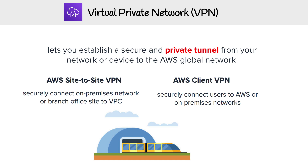Hey, this is Andrew Brown from Exam Pro. We are looking at AWS VPN, which stands for virtual private network. What this service does is it lets you establish a secure and private tunnel from your network or device to the AWS global network.